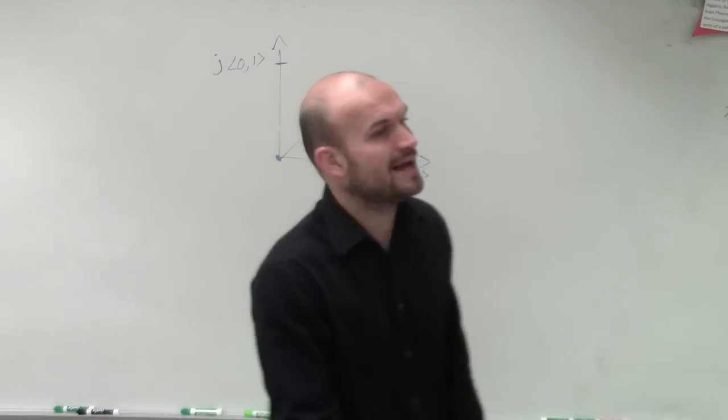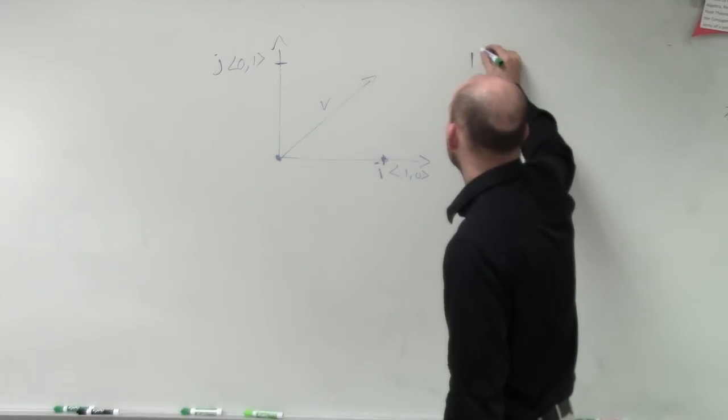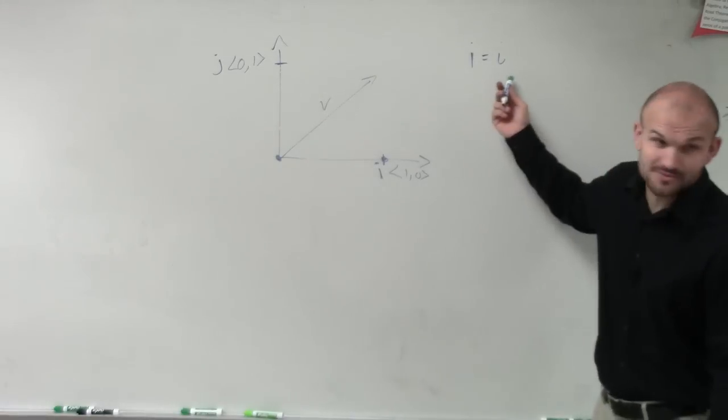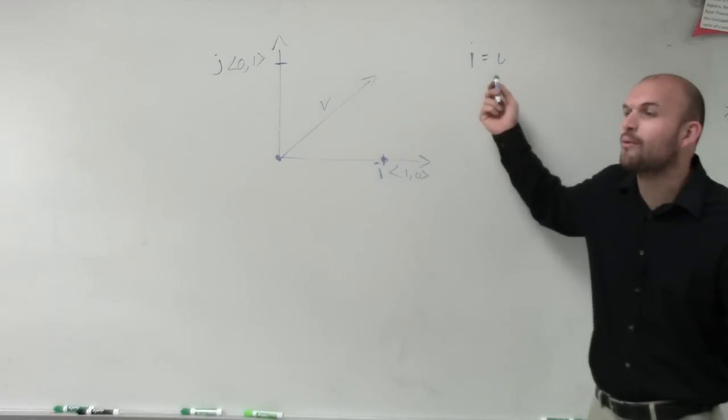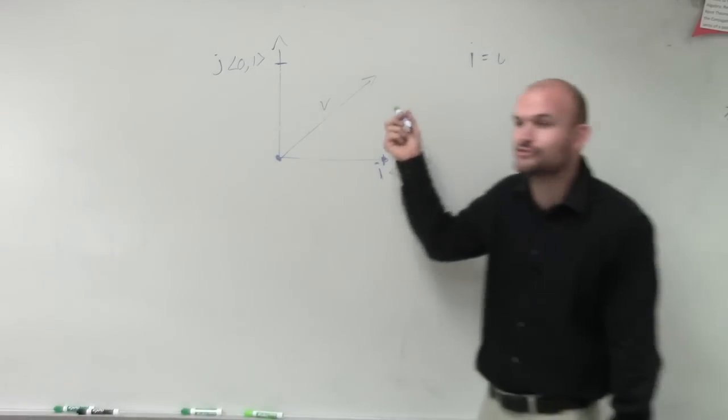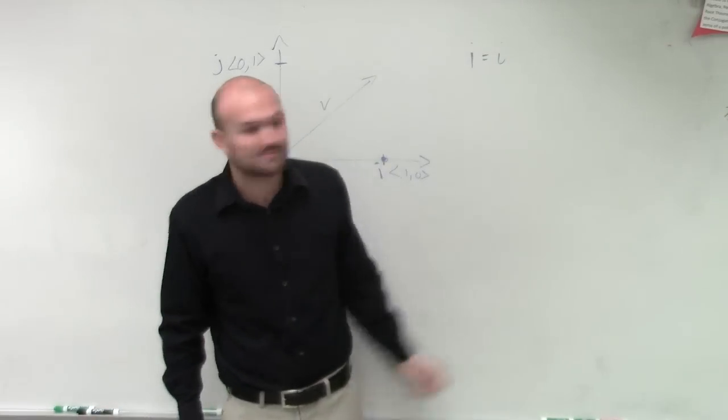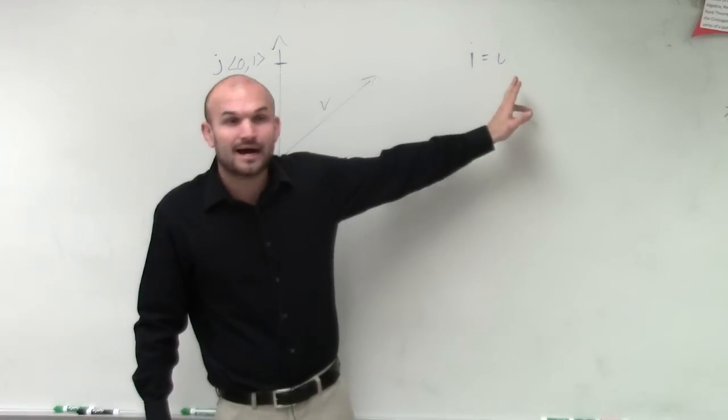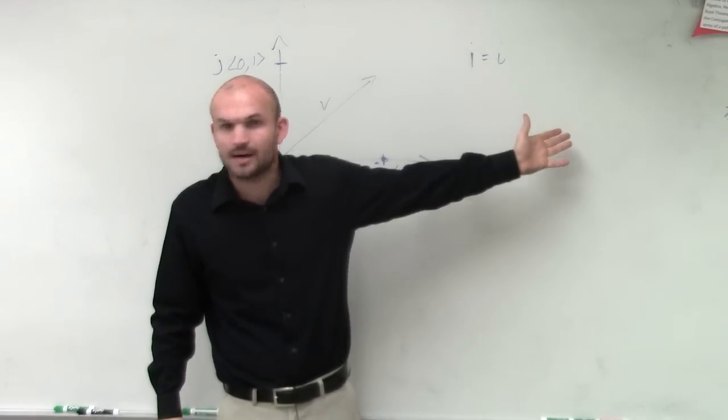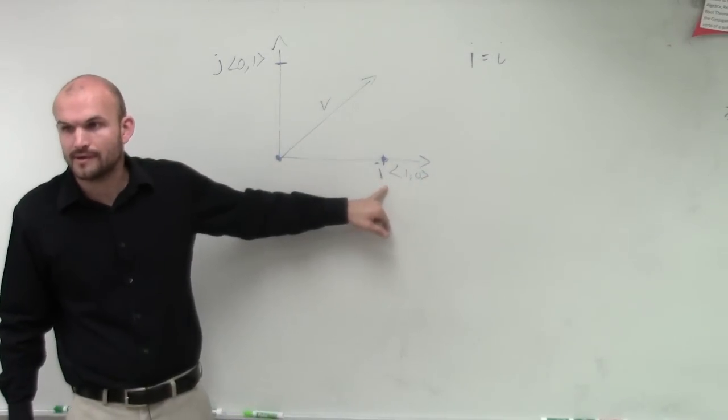Now, notice how I wrote my i, OK? i does not equal i. You guys remember this one, right? You guys made fun of me like, why do your i's look so crazy? Why do you put that tail on it? You don't know how to write a true i. Well, ladies and gentlemen, I wrote that i so we can make sure we can distinguish this. Because if I write that i, I'm using that to represent our complex numbers, right, complex number system. This i is representing this unit vector, all right?